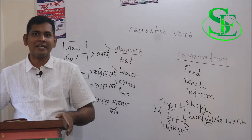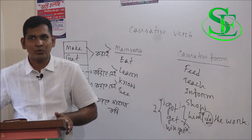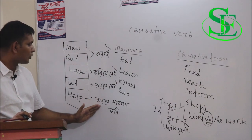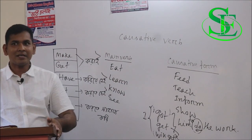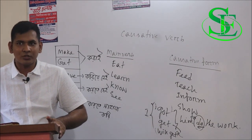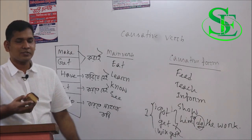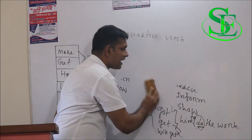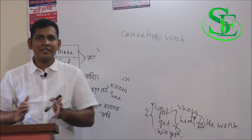The last causative verb is 'help,' which means 'korte shahadjo kori' — to assist in doing. For example: 'I help him do the work' — 'Ami takedie kasti korte shahadjo kori.' 'I helped him do the work' — 'Ami takedie kasti korte shahadjo koriyechi.' 'I will help him do the work' — 'Ami takedie kasti korte shahadjo koribo.'